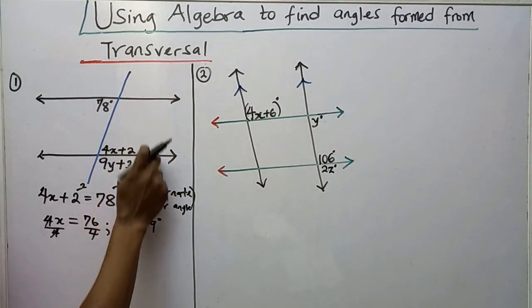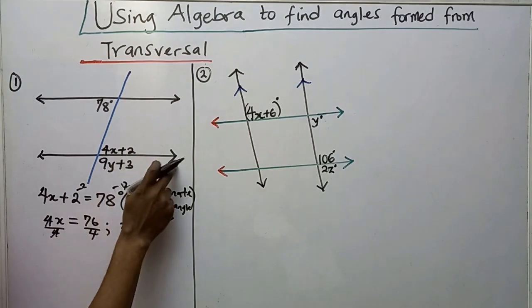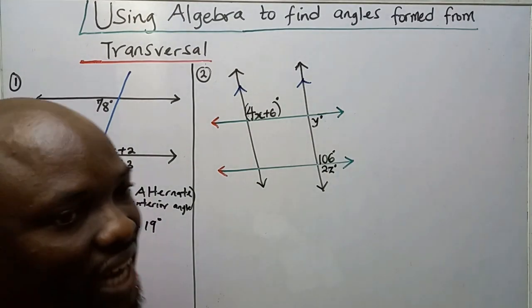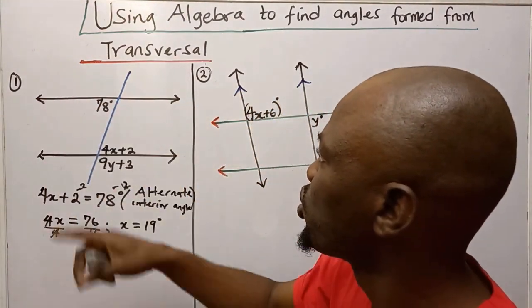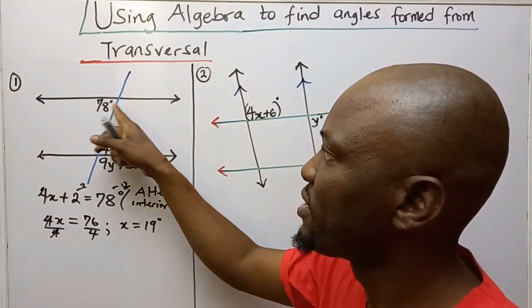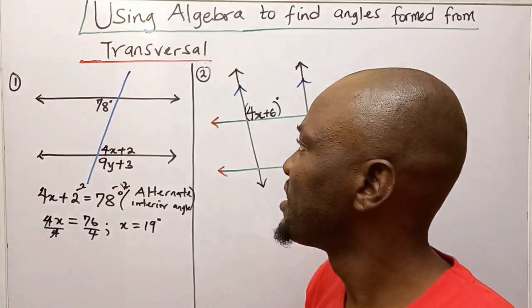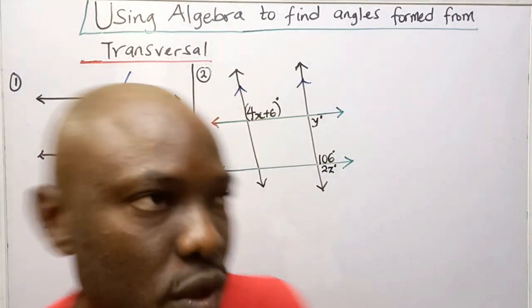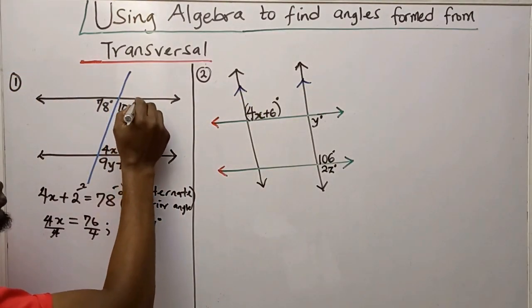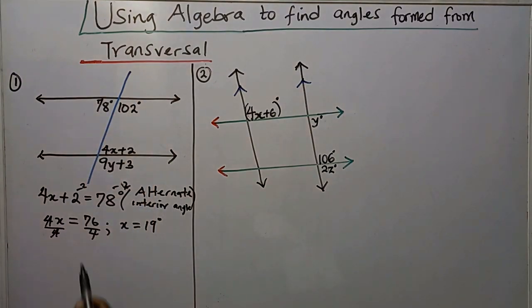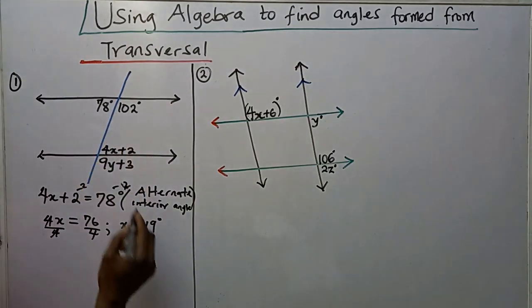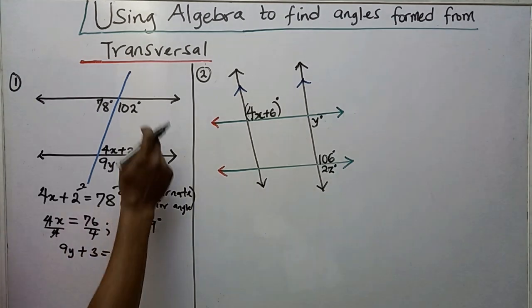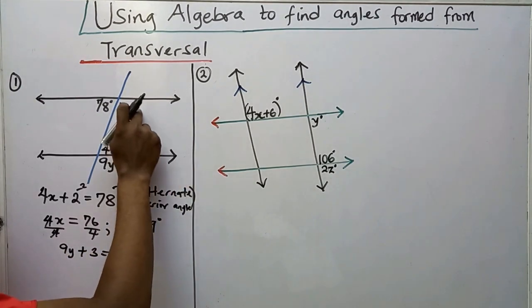Now since X is 19 degrees, I want to get Y. This is a parallel line, and to use corresponding angles to find Y, I first need to find another angle. Since this is a straight line, the sum of angles on a straight line is 180 degrees. So I subtract 78 from 180, which gives me 102 degrees.